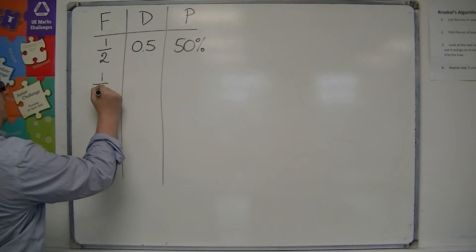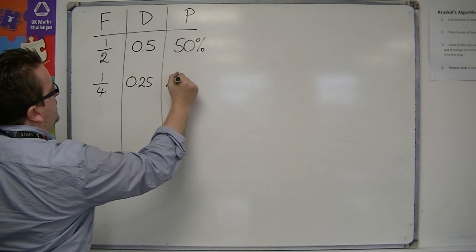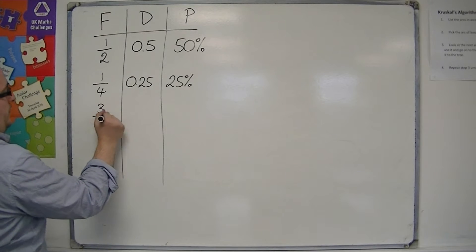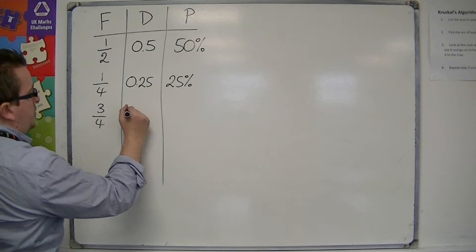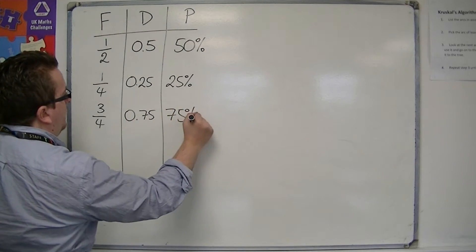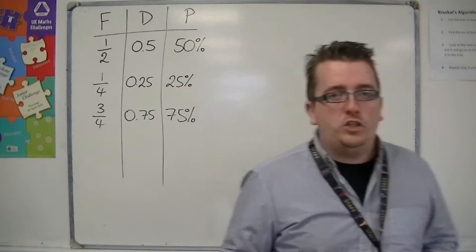There's also a quarter, which is 0.25, which is 25%. And there's three quarters, which is 0.75, which is 75%. So there are three that I would expect you to know.